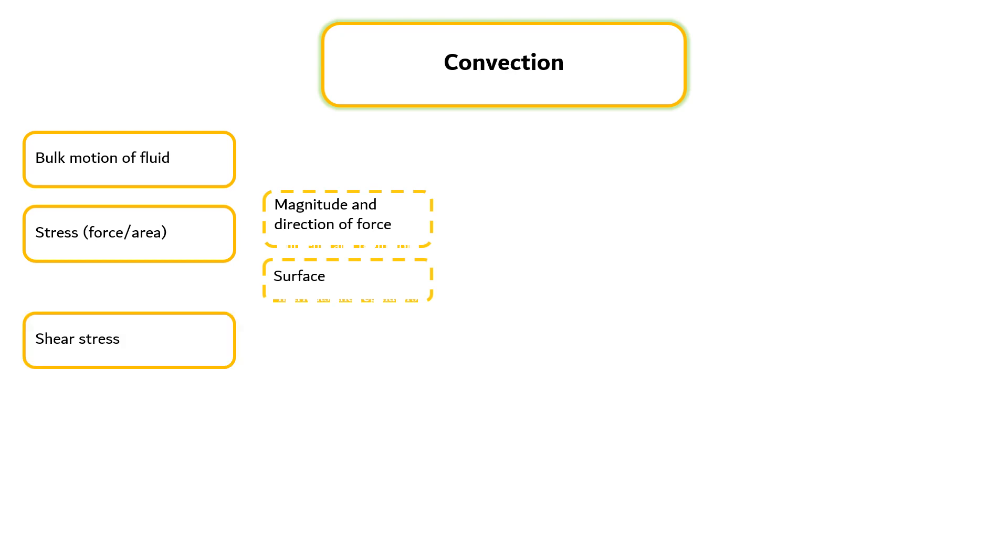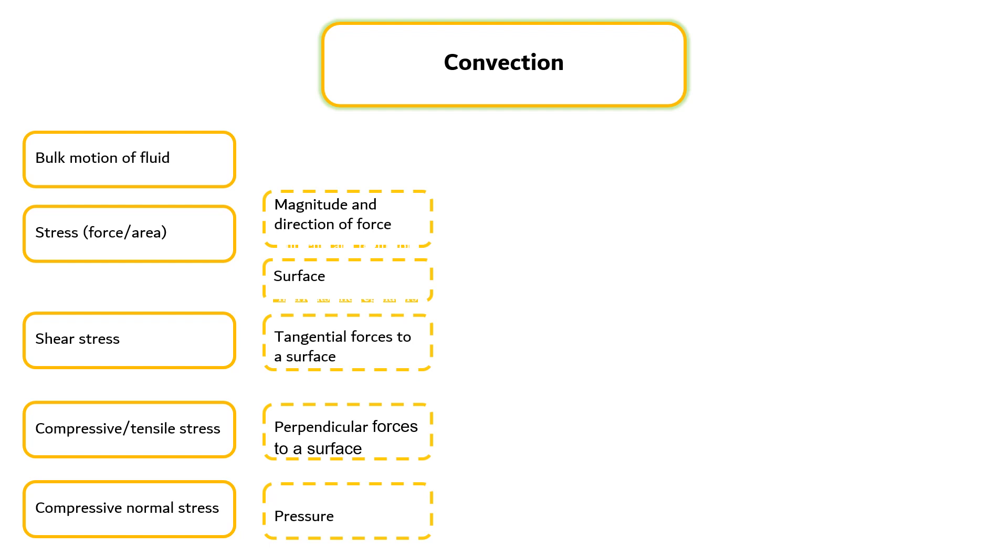Shear stresses result from forces applied tangent to a surface, causing two contiguous parts of the material to slide relative to each other. Biological examples of shearing forces are those which occur in joints and in the eyelids. Stresses acting perpendicular to a surface can be compressive or tensile. Pressure which helps propel the flow of blood through the circulatory system is a compressive normal stress. Both the application of shear stress and pressure difference result in fluid motion.